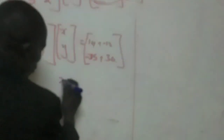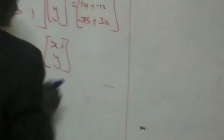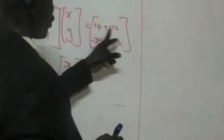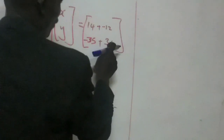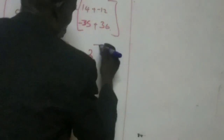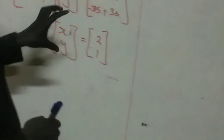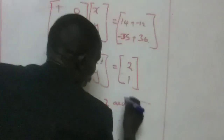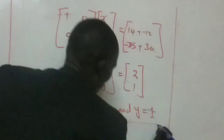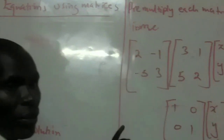The identity matrix times a matrix gives us that same matrix, so multiplying the identity by [x, y] gives us [x, y]. This equals 14 minus 12, which is 2, and negative 35 plus 36, which is 1. Therefore, since two matrices are equal, elements in the same position are equal. Therefore x is equal to 2, and y is equal to 1. That is how we solve simultaneous equations using the matrix method.